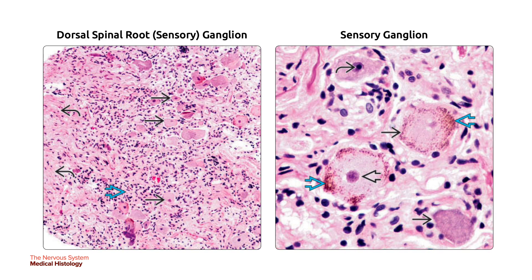On the left is a section from the dorsal root ganglion at the T10 level, showing a cluster of neuronal cell bodies in the single black arrow. The surrounding smaller, darker nuclei in the bold blue arrow belong to your satellite cells. The longitudinal bundles of nerve fibers in the curved black arrow belong to the spinal nerve associated with this ganglion. On the right, a high-power view shows large spherical perikarya with large pale centrally located nuclei and prominent nucleoli. Brown-blue Nissl substance in the bold blue arrow can also be seen in the cytoplasm.